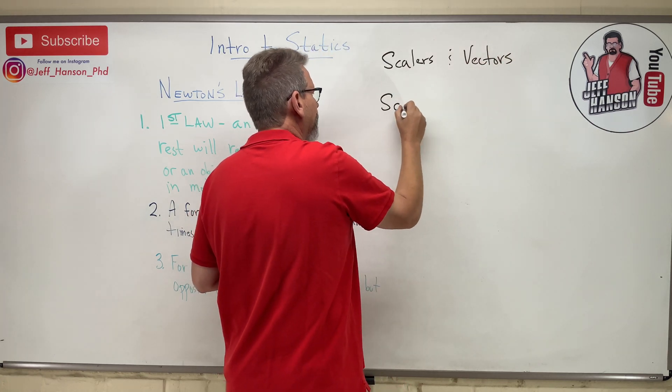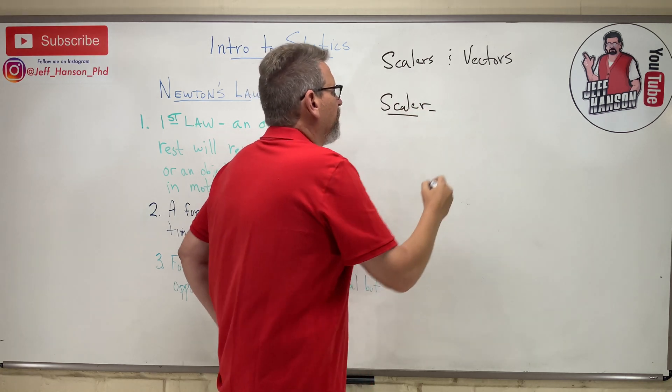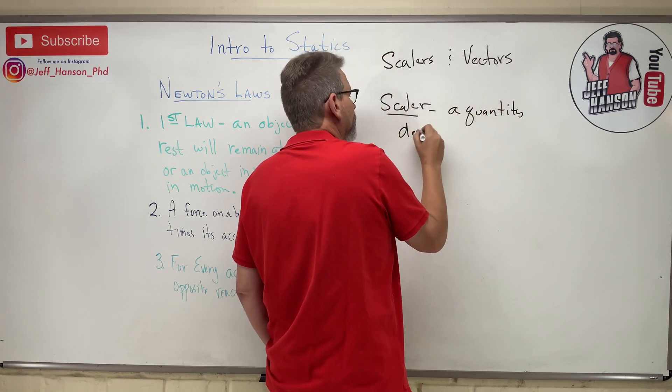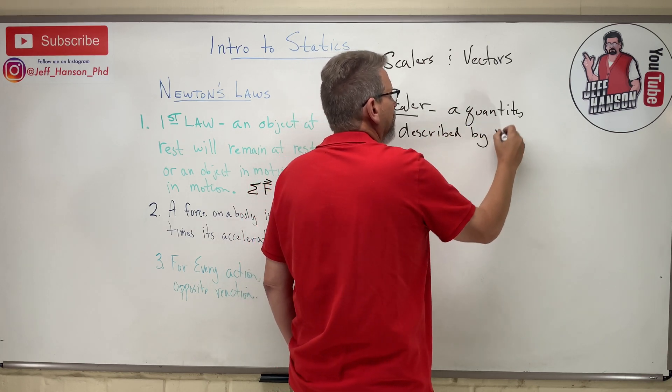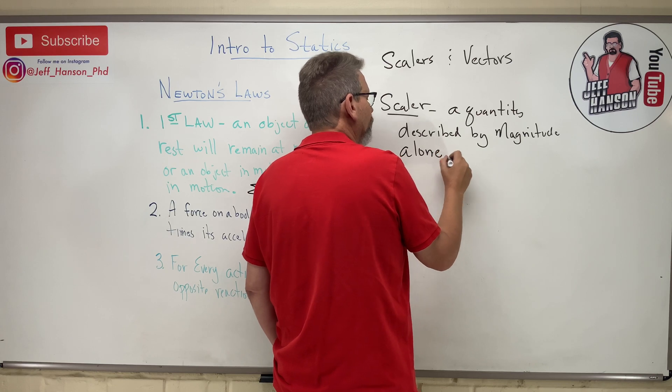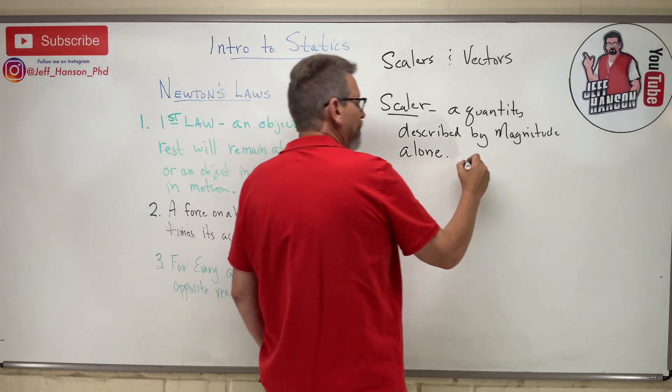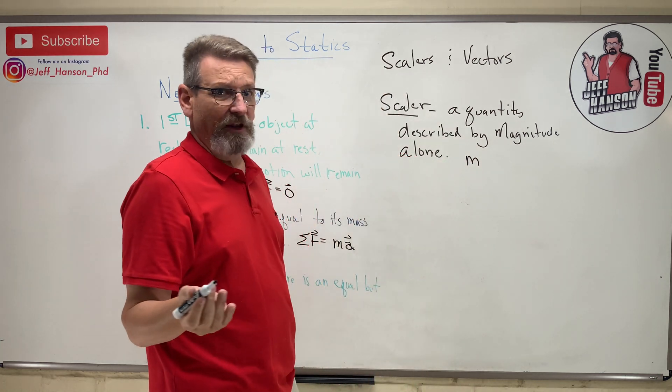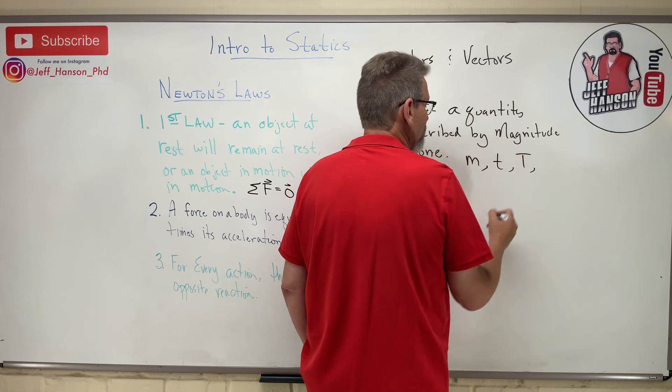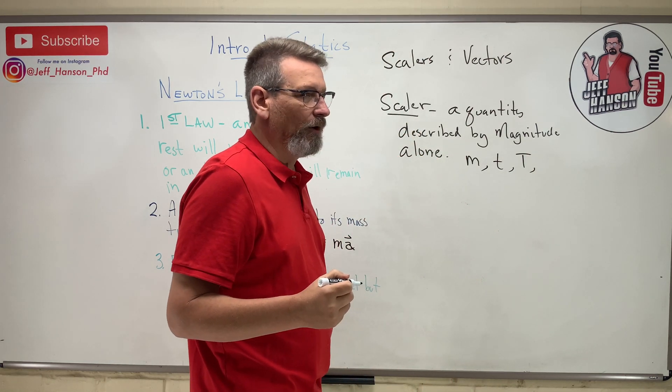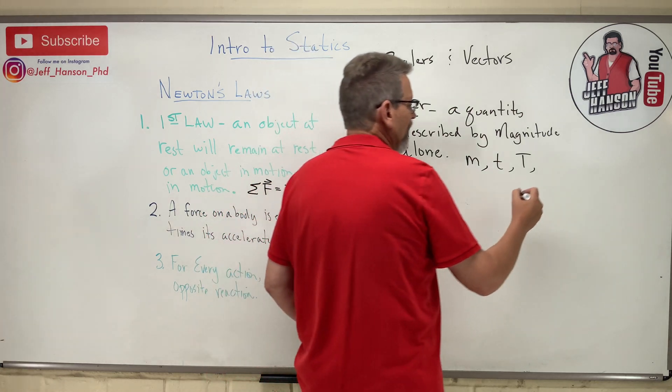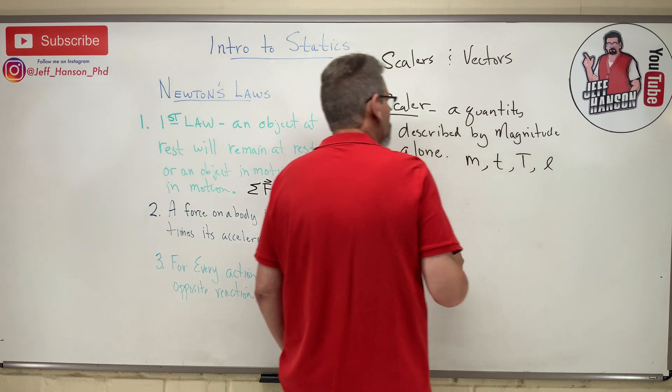The next thing I want to talk about is the difference between a scalar and a vector. So what is a scalar? A scalar is a quantity described by magnitude alone. Just magnitude, that's it. Something like mass. It's not mass to the left. It's not mass up. It's just mass. Time just is. Temperature just is. Maybe length.